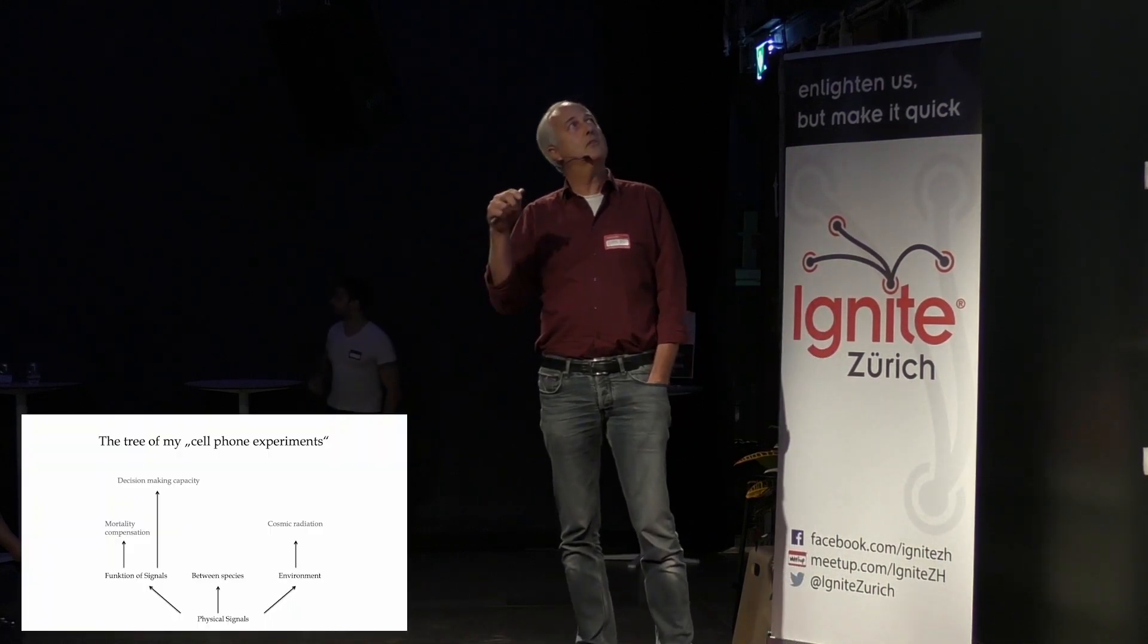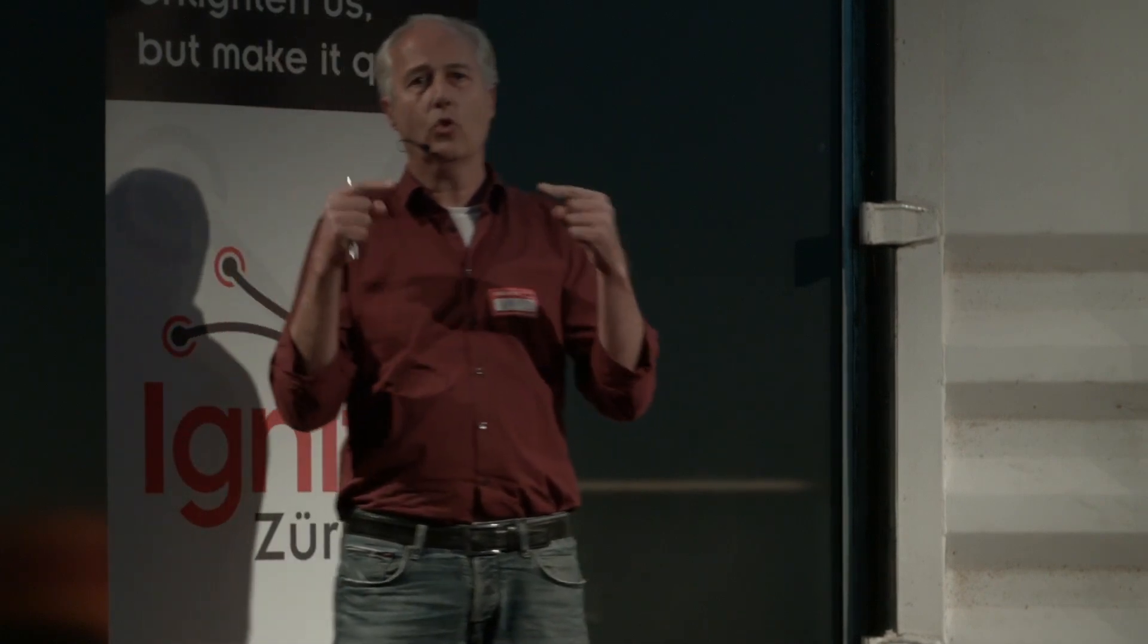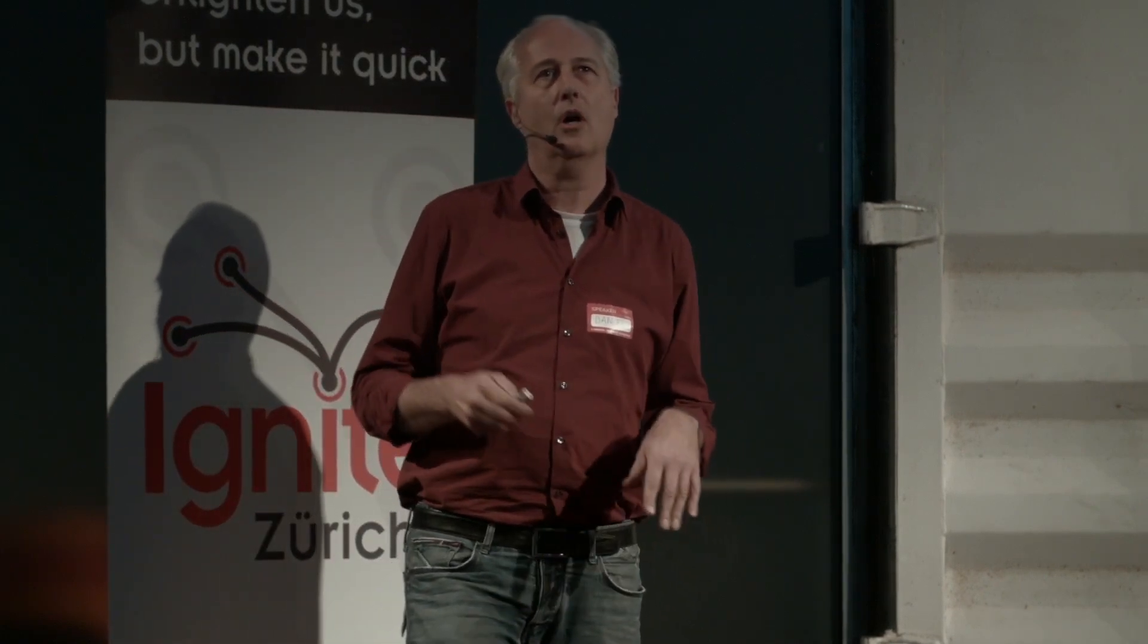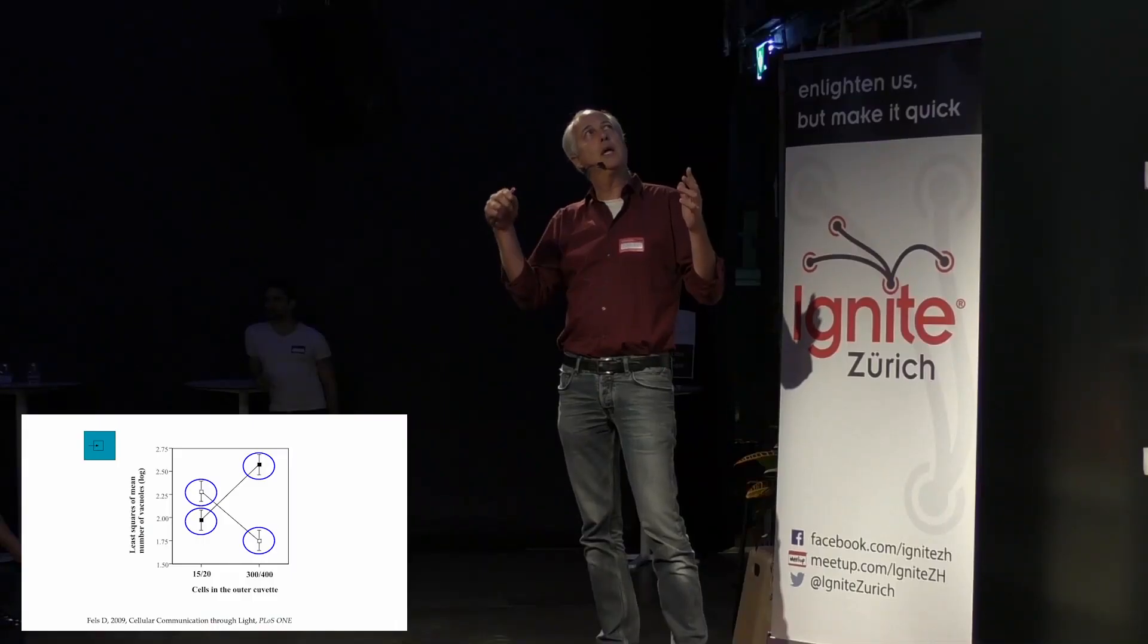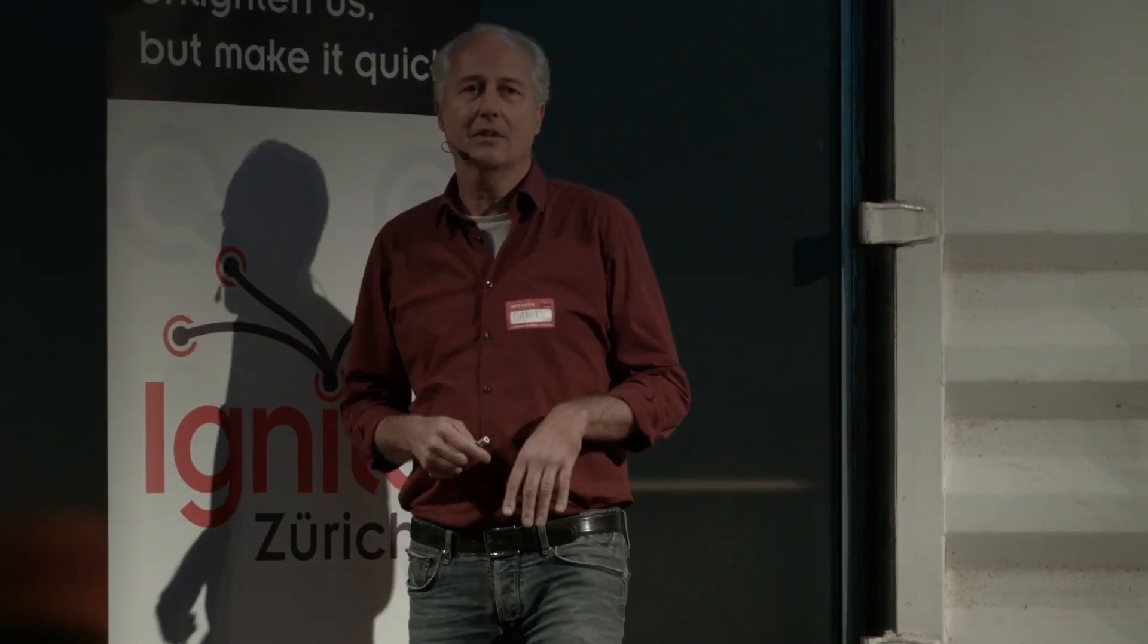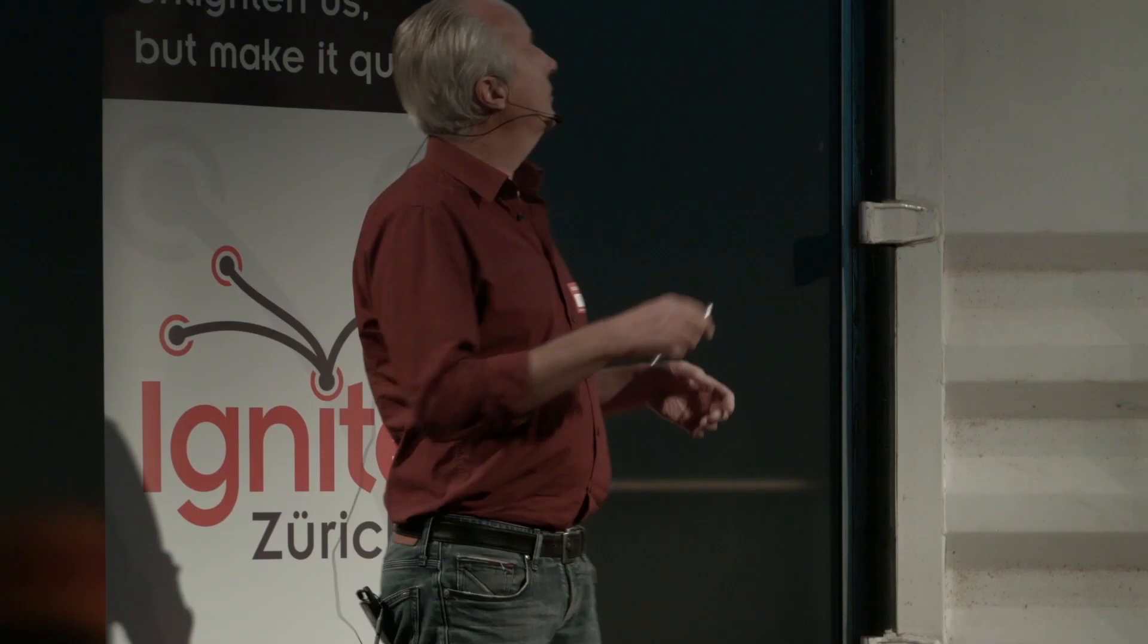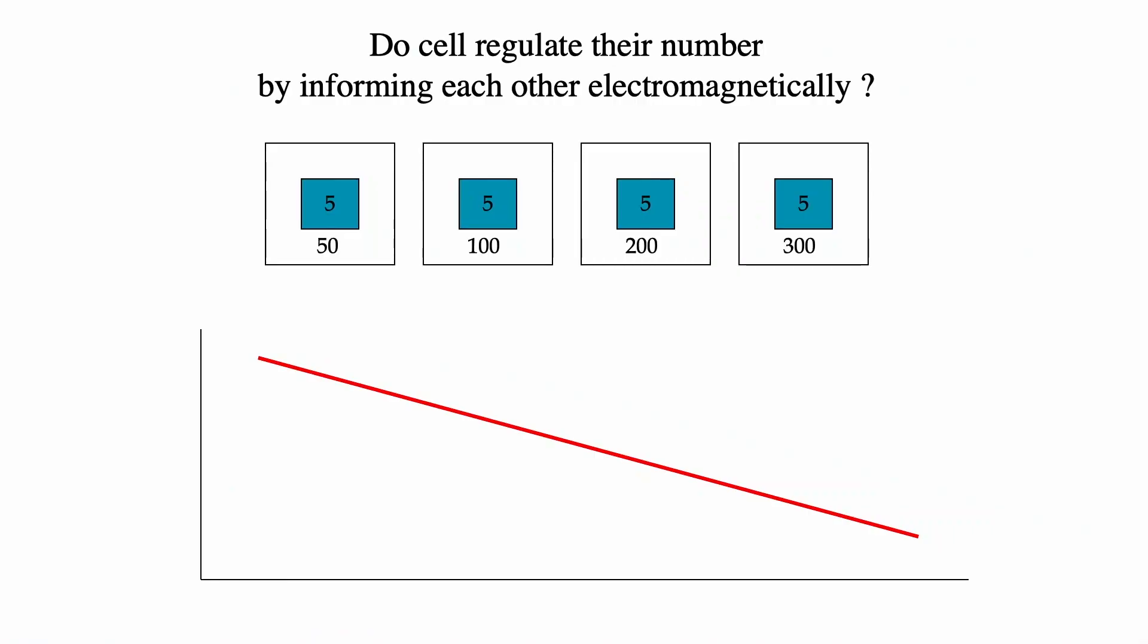So, in a series of experiments, I wanted to find out first, are they sensitive? What is the function of the signals? And probably also whether different organisms can talk to each other. We do not go into details, but these were the first results that were telling me there are strong effects if they have many neighbors or a few neighbors. This was highly significant in two different systems. And analyzing that, I wondered whether the regulation of cell density is electromagnetically organized.